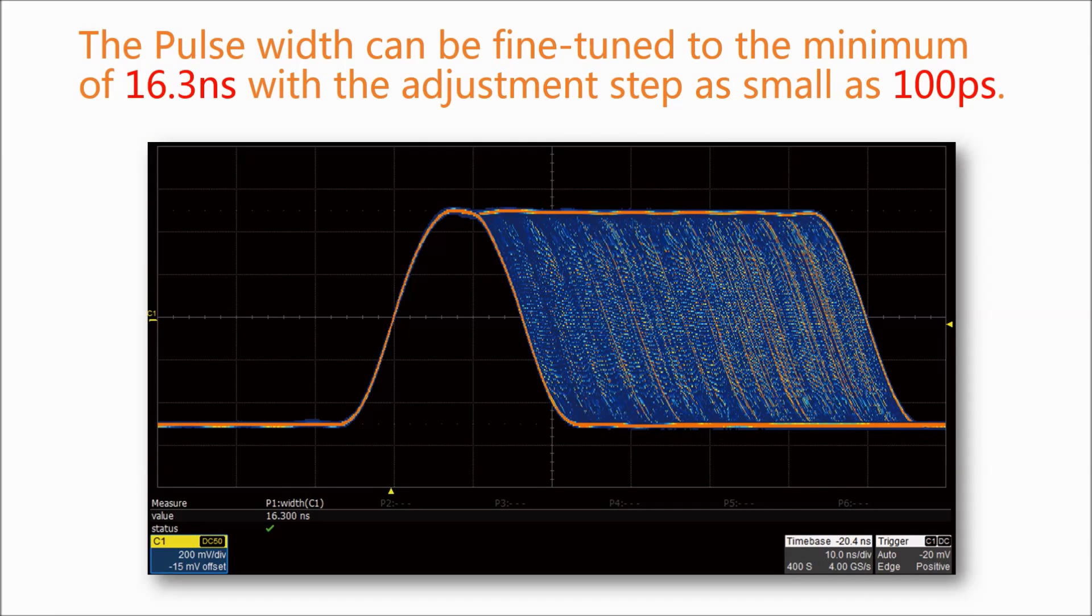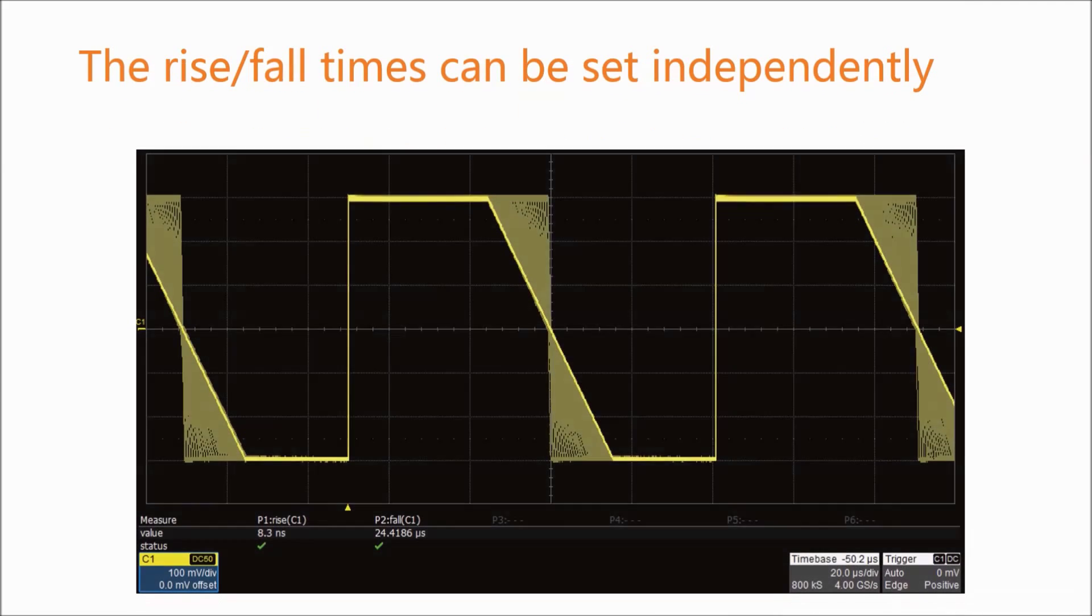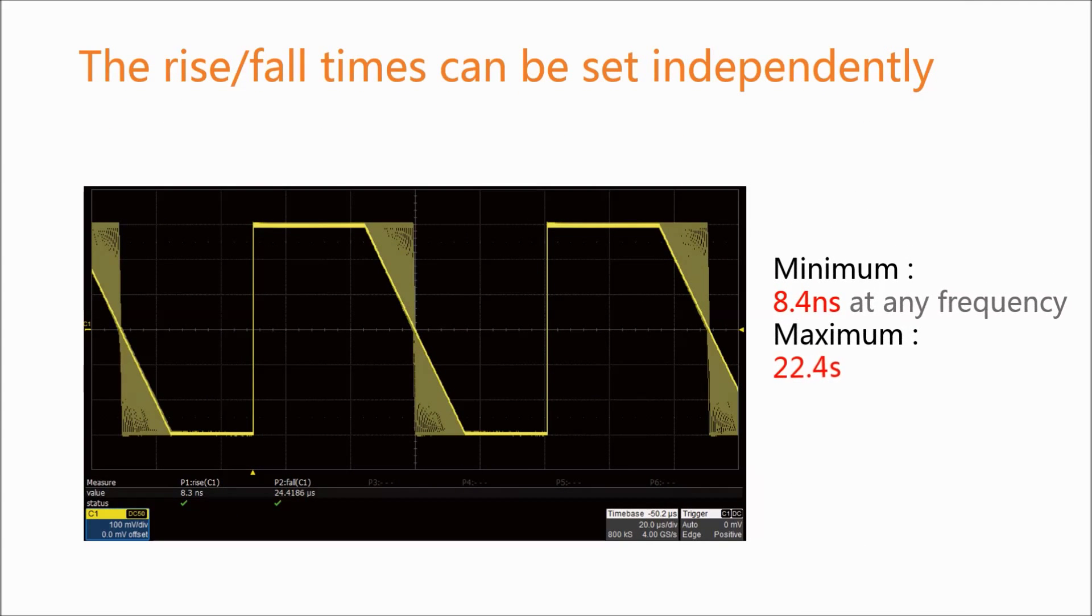The pulse width can be fine-tuned to the minimum of 16.3 nanoseconds with the adjustment step as small as 100 picoseconds. The rise and fall times can be set independently to the minimum of 8.4 nanoseconds at any frequency and with a maximum of 22.4 seconds. The adjustment step is as small as 100 picoseconds.